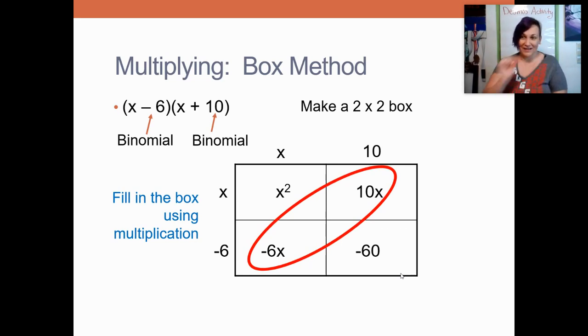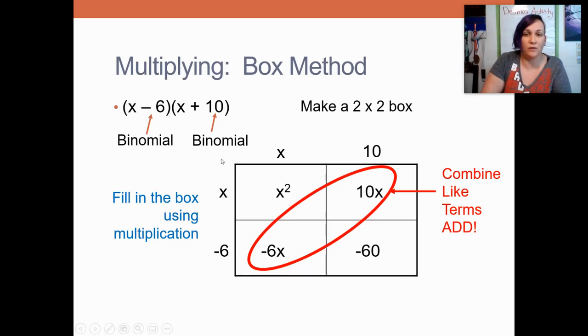So you can look across that diagonal and those are the like terms. And you're going to combine them together using addition. So make sure you're thinking adding now. I just kind of like to snake my way around the box. So I'll start up here with the x squared. And then I'm going to combine these together. When you're adding, you just add coefficients. So 10 plus negative 6 is positive 4. And I'm going to keep it a letter x. And then I snake around here to my minus 60.